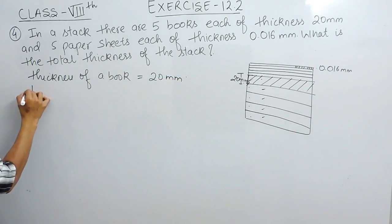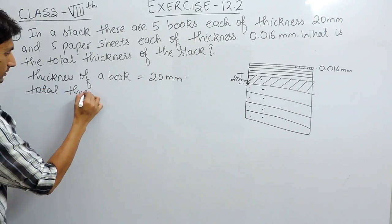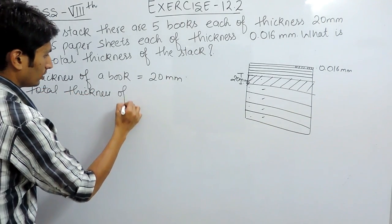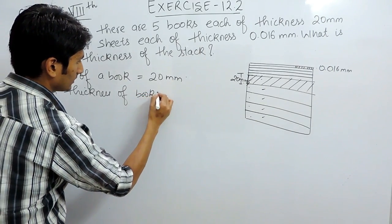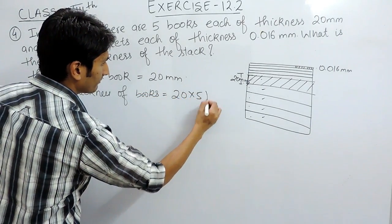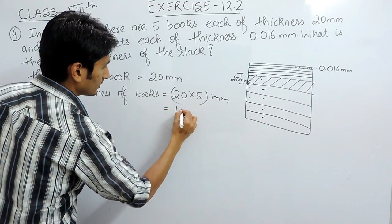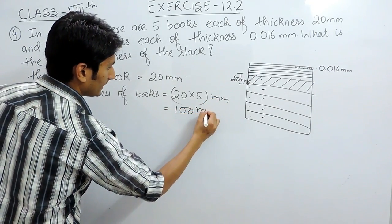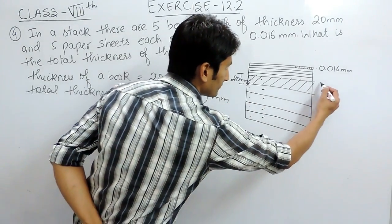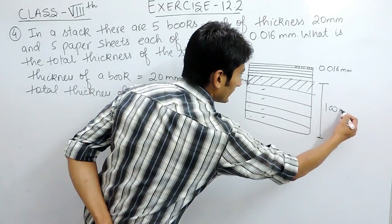So the total thickness of the books should be 20 multiplied by 5, which is 100 mm. This is the total thickness of all 5 books.